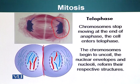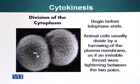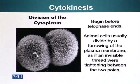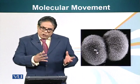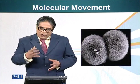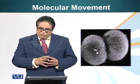Now that mitosis is complete, we move on to cytokinesis — the splitting of one cell into two. In animals, this is done by furrowing of the plasma membrane. A useful analogy: if you take a ball of dough and run a string around it and pull on the string, it will splice the ball of dough into two. In lab, you will be shown different slides and asked to identify different phases of cell division.